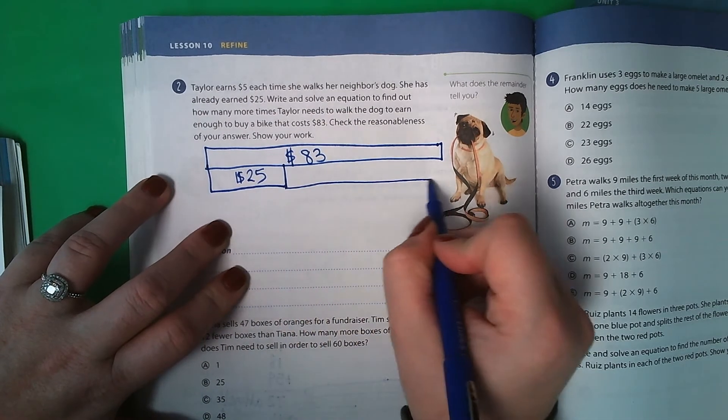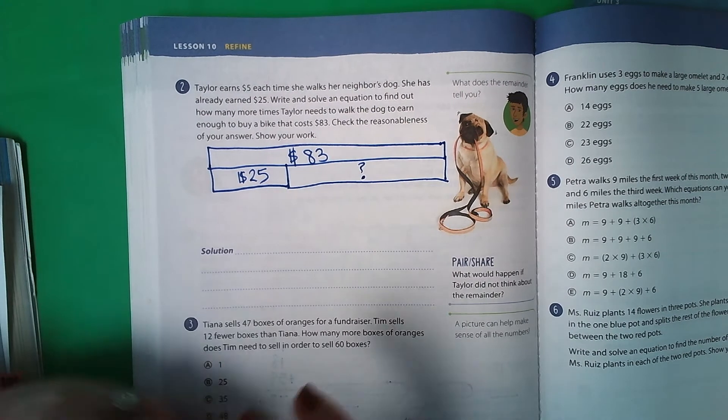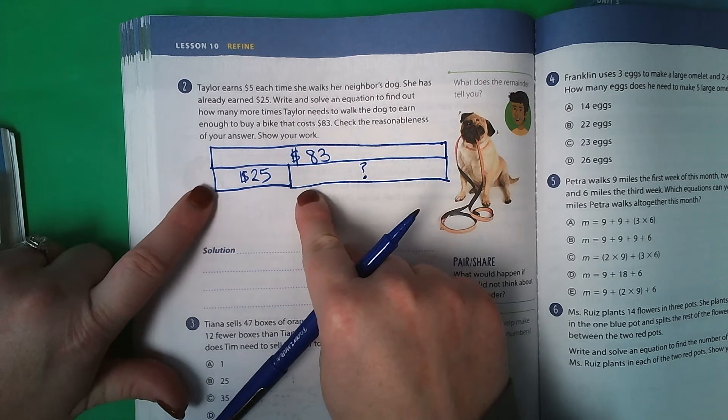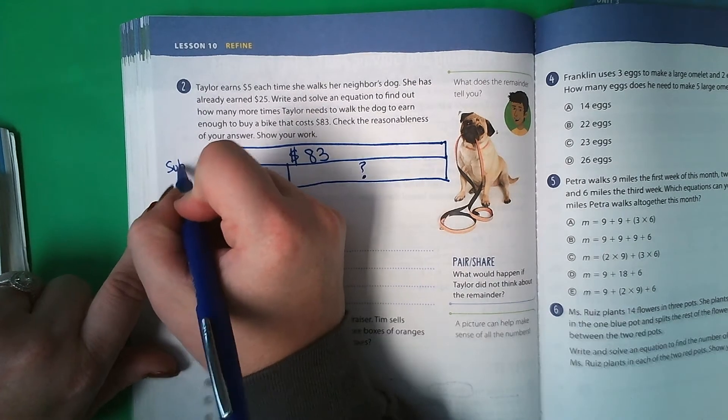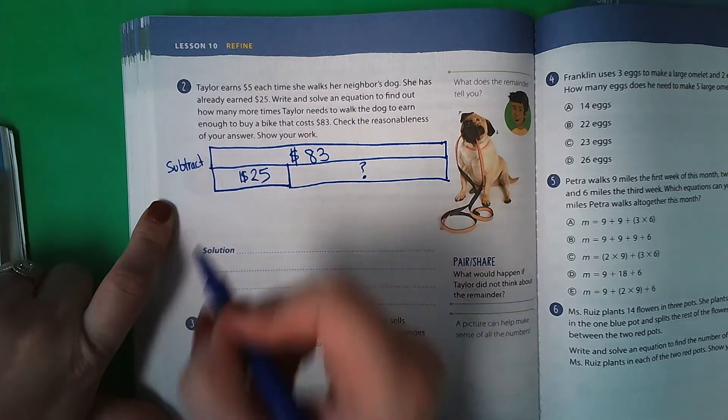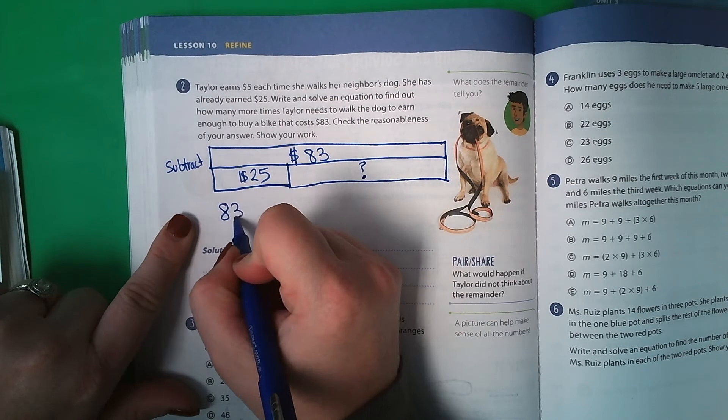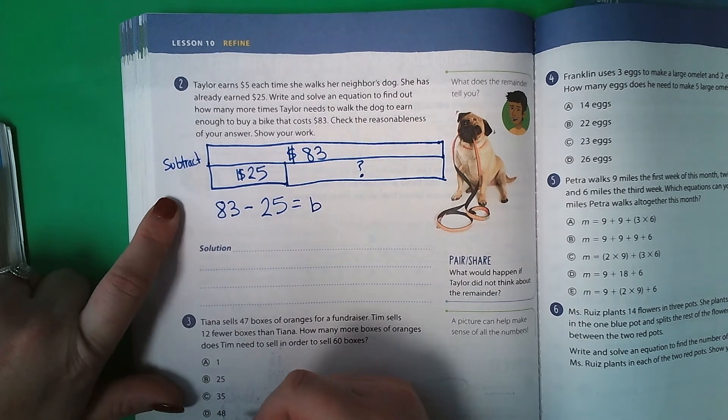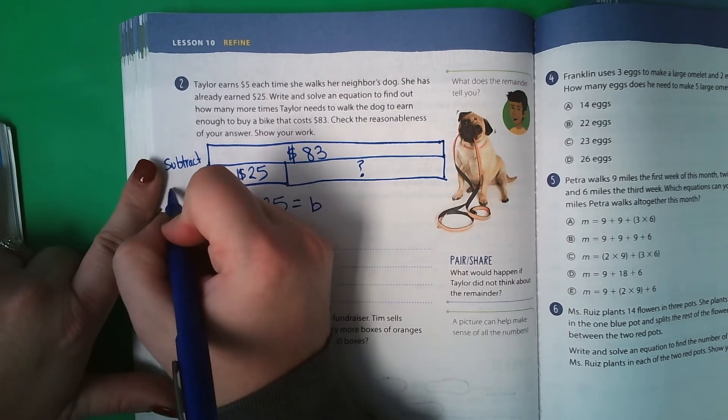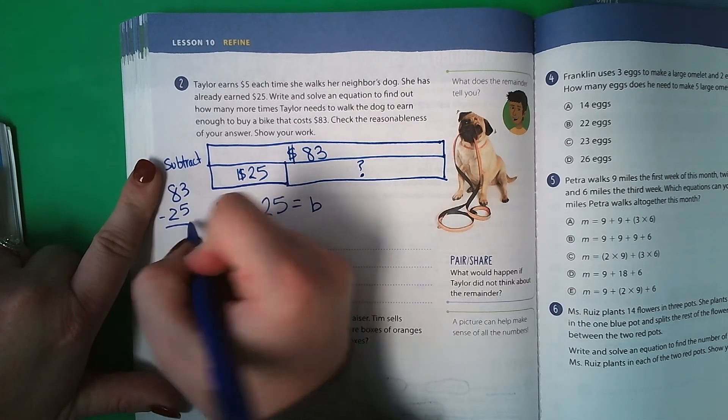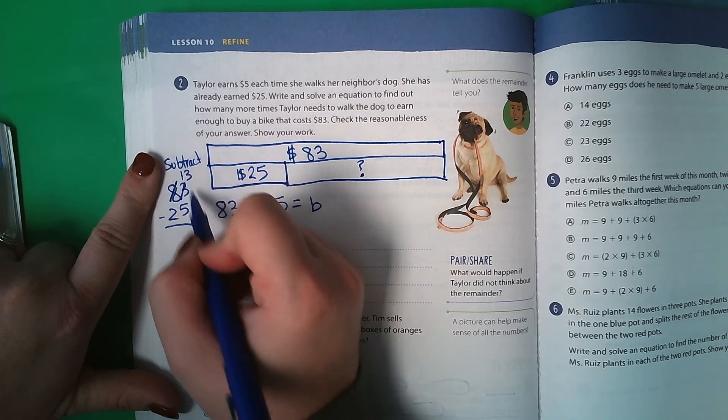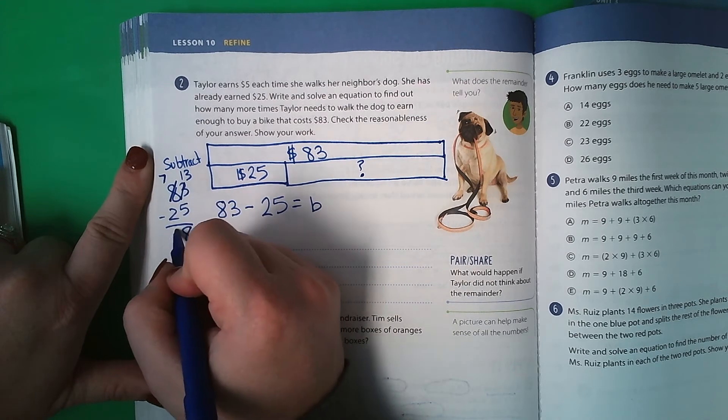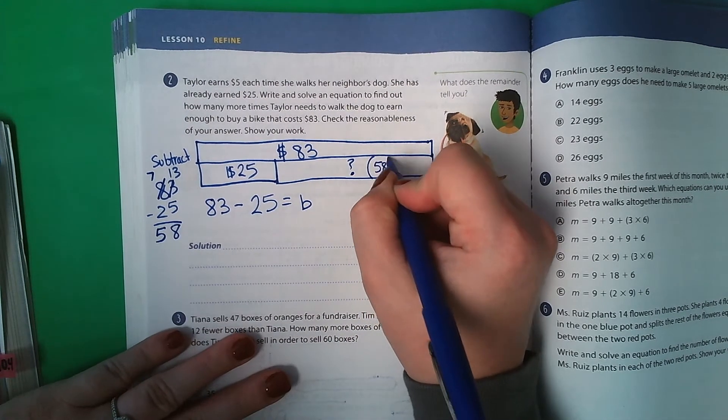But she needs to earn this much more to have enough to buy a bike. If you remember from lesson one, when we have a problem like this, it is a subtraction problem. So I'm going to take 83 minus 25 equals, we'll put a B for bike. I don't like writing it this way, so I'm going to rewrite it up and down. 8. Can't do that. So 13 minus 5 is 8. 7 minus 2. So she needs to earn 58 more dollars.